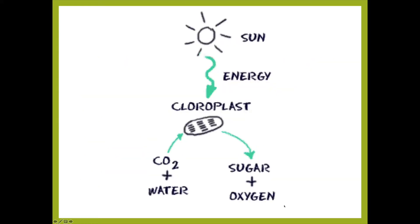There is nothing to write for this slide — it just provides a quick overview. Essentially in photosynthesis, energy from the Sun is taken in by the chloroplast, along with carbon dioxide and water, in order to create sugar. In the process it also releases oxygen.